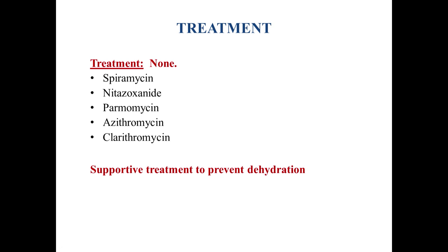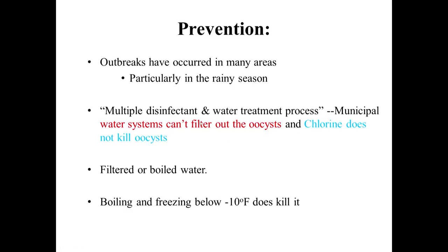Treatment: many patients do not require treatment due to asymptomatic illness, but if needed, spiramycin, nitazoxanide, paromomycin, azithromycin, or clarithromycin could be useful. Supportive treatment is needed especially in immunocompromised patients due to significant water loss, to prevent dehydration. For prevention, since outbreaks occur in many areas especially in rainy seasons, multiple disinfectant and water treatment processes are needed. However, chlorine is known not to kill the oocysts, so filtered or boiled water is required. Boiling and freezing below minus 10 degrees Fahrenheit can kill the oocysts.